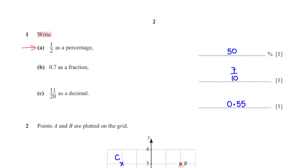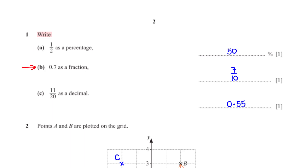Write 1 over 2 as a percentage. To convert 1 over 2 to a percentage, we multiply 1 over 2 by 100%, giving us 50%. Write 0.7 as a fraction. When we type 0.7 into the calculator, we get the fraction equivalent to be 7 over 10.